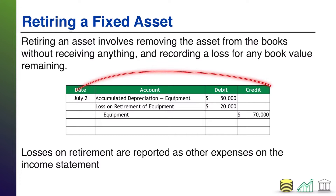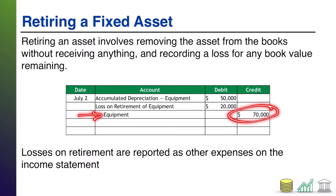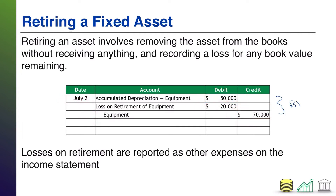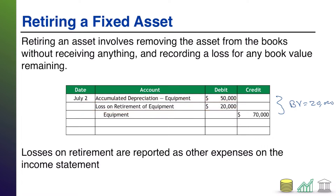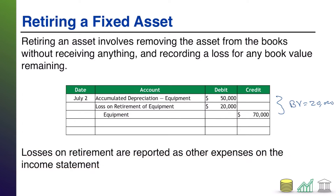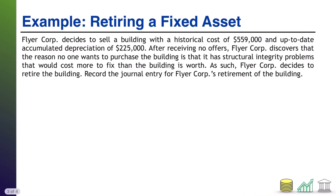In this example we are getting rid of a piece of equipment that had a historical cost of seventy thousand and accumulated depreciation of fifty thousand, which means the equipment had a book value of twenty thousand. Our balance sheet says this asset still has twenty thousand dollars worth of value, but since we're not getting anything in exchange, that full twenty thousand simply becomes a loss on retirement. Losses on retirement are reported as other expenses in the non-operating section of the income statement.